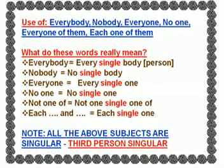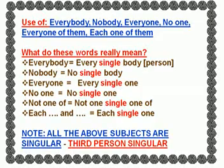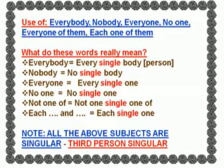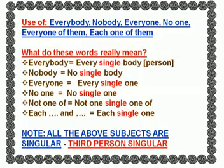Let's observe the use of everybody, nobody, everyone, no one, everyone of them, each one, one of them. Everybody means every single person. Nobody means no single body. Everyone means every single one. No one means no single one. Not one of means not one single one of. Each means each single one. Note: all the above subjects are singular — third-person singular.